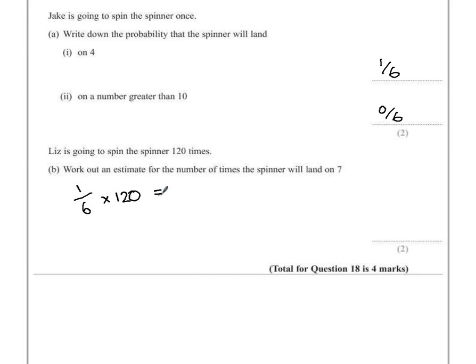Well, 12 divided by 6 would be 2. So 120 divided by 6 must be 20, meaning that she should land on 7, 20 times.